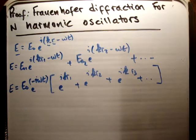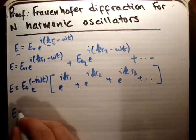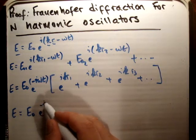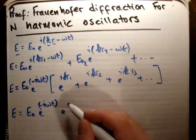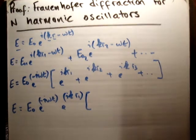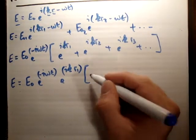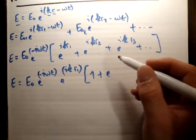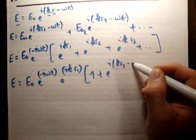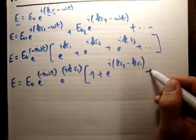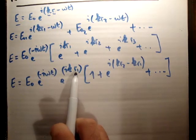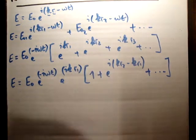The next thing I'm going to do is pull out e to the ikr1. So we're going to get E times the initial amplitude e0, times e to the negative iωt, and pulling out e to the ik times r1. What we'll be left with is 1 plus e to the i times (kr2 minus kr1), plus dot dot dot — so the next term is r2 minus r1, the third is r3 minus r1, and so on.